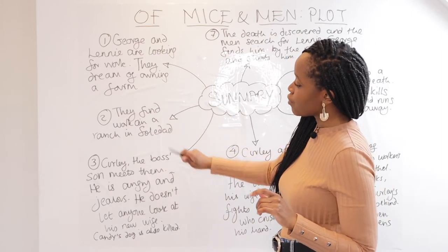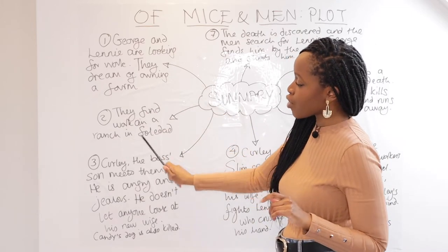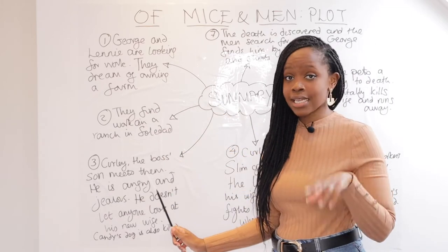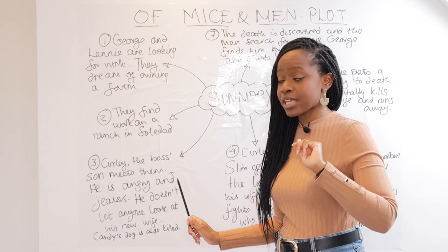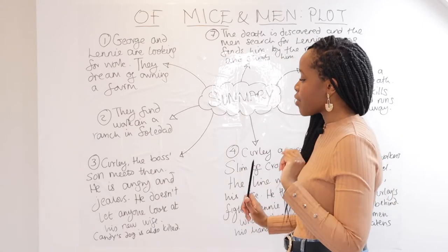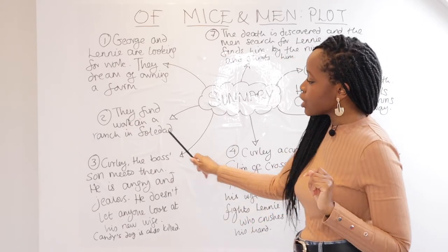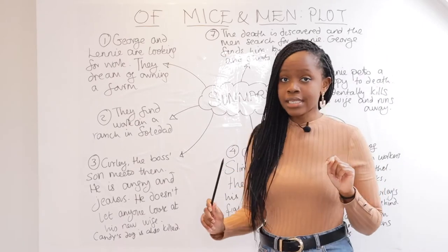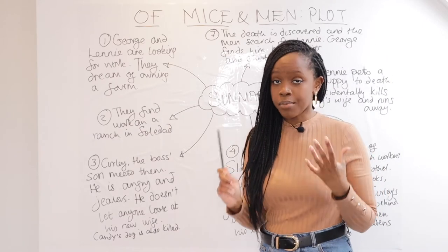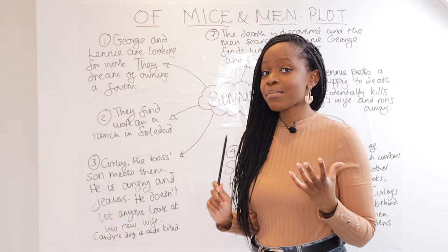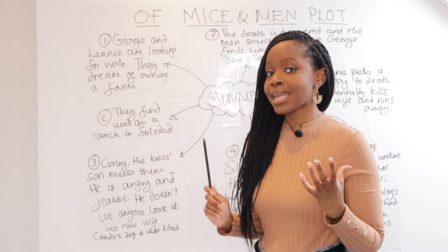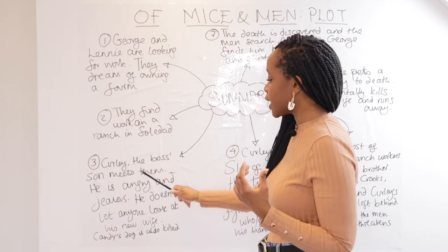The second major event is when George and Lennie do find work on a ranch in Soledad. Then, thirdly, once they find work in Soledad at the bunkhouse, they meet the first main character, Curly, who is the boss's son.